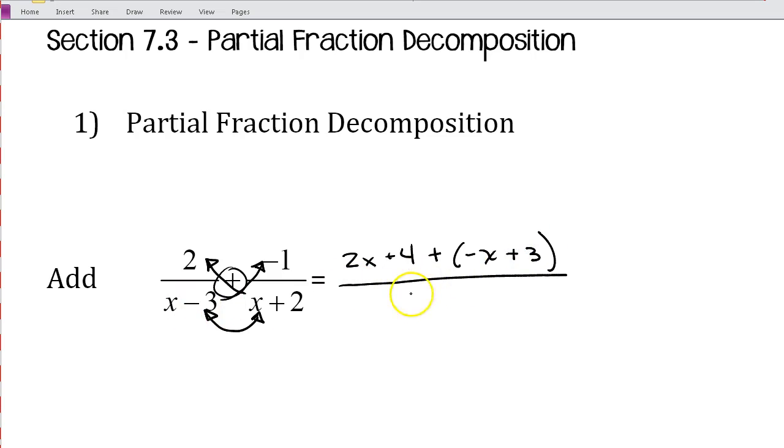So that's going to be minus x plus 3. And then I'll multiply my denominators, x minus 3 and x plus 2. So if I go ahead and simplify, I have 2x minus x, which is just going to be x. And I have 4 plus 3, which is 7. And then I could go ahead and foil out the bottom. And that would give me x squared minus x minus 6.